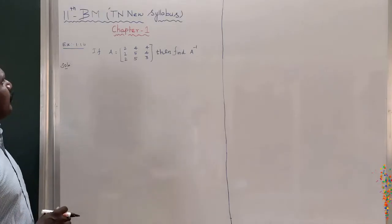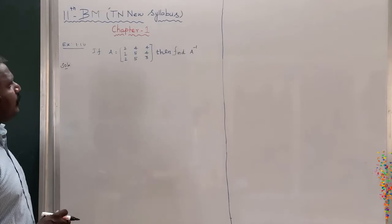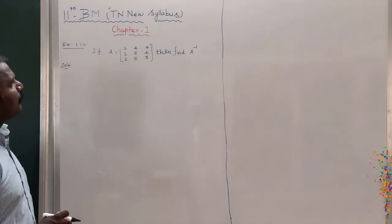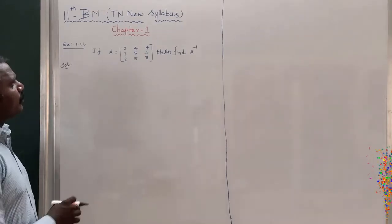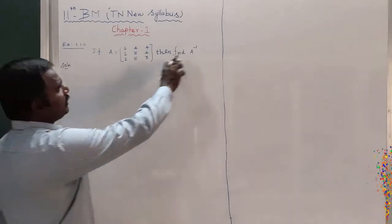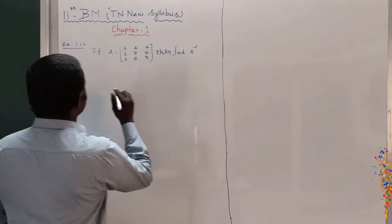Example 1.16: if A equals the matrix [2 4 4; 2 5 4; 2 5 3], then find A inverse.